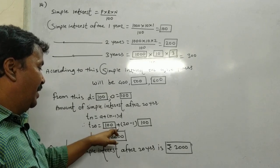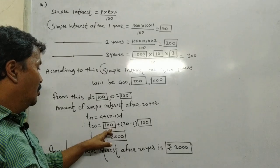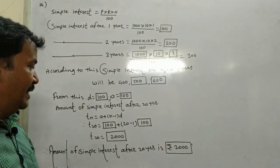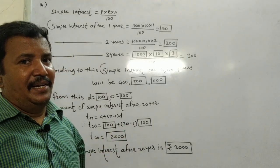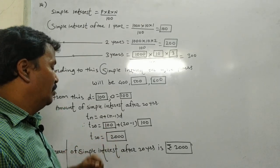So a is 100 plus (20 minus 1) into 100. Now, 20 minus 1 is 19. 19 into 100 is 1900. 1900 plus 100 equals 2000. Amount of simple interest after 20 years is Rs. 2000.